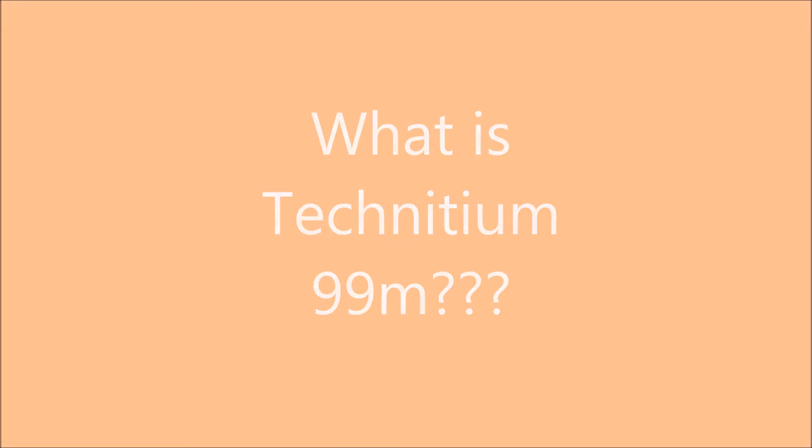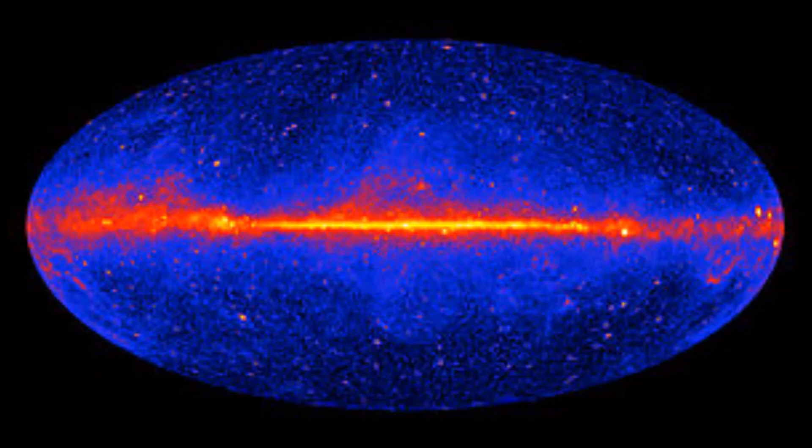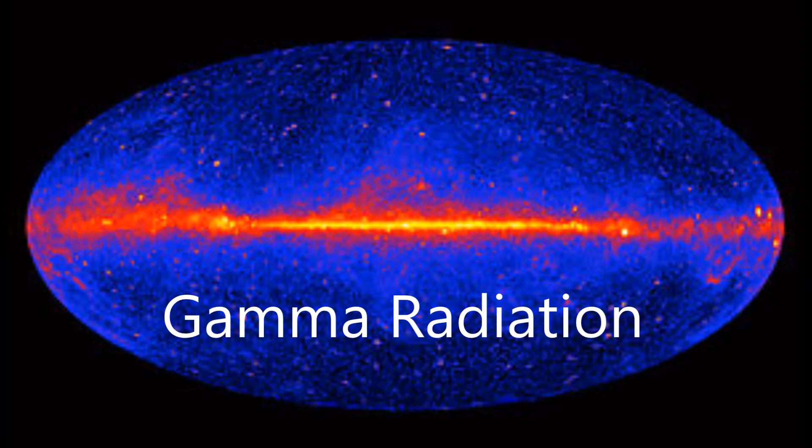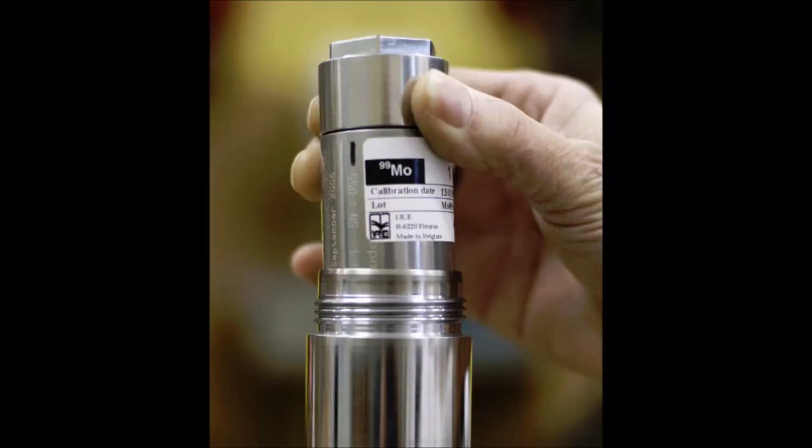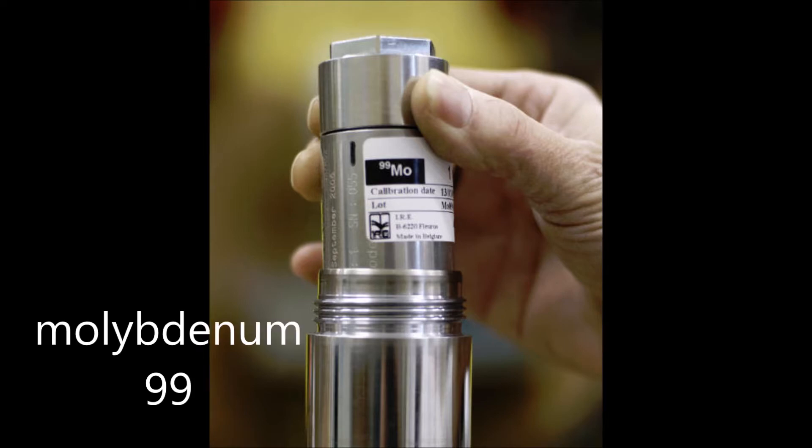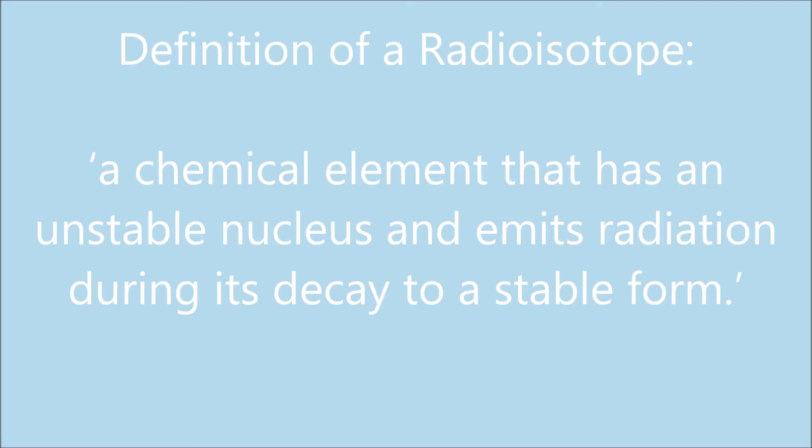What is technetium-99m? Technetium-99m is a radioisotope that is made up of gamma radiation. It is obtained through the decay of another radioisotope known as molybdenum-99. A radioisotope is defined as a chemical element that has an unstable nucleus and emits radiation during its decay to a stable form.